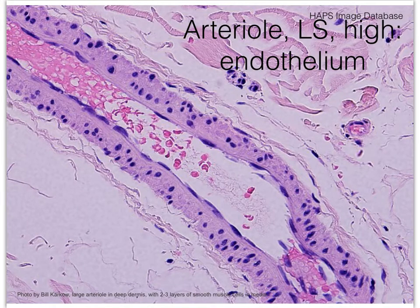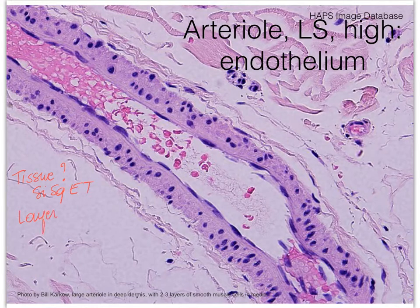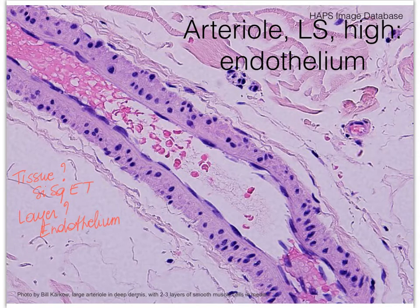We refer to that layer as endothelium. So you may see a question asking what is the tissue that lines blood vessel walls — your answer would be simple squamous epithelial tissue. If you're asked what is the name of the layer that lines blood vessel walls, your answer would be endothelium. You can refer to the cells as endothelial cells. By default, endothelial cells are squamous cells.